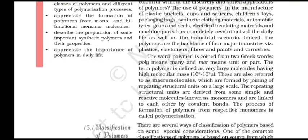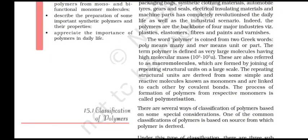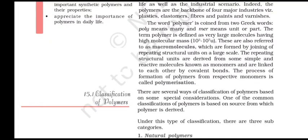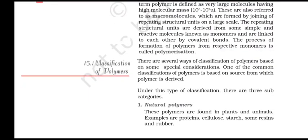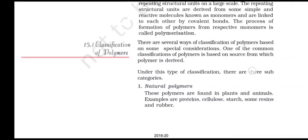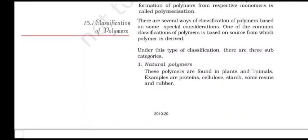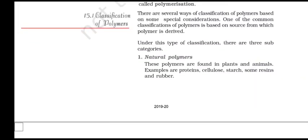Indeed, polymers are the backbone of four major industries: plastics, elastomers, fibers, and paints and varnishes. The word polymer is coined from the Greek words 'poly' meaning many and 'mer' meaning unit or part. The term polymer is defined as very large molecules having high molecular mass, also referred to as macromolecules, which are formed by joining repeating structural units on a large scale. These repeating structural units are derived from simple and reactive molecules known as monomers and are linked to each other by covalent bonds. The process of formation of polymers from respective monomers is called polymerization.